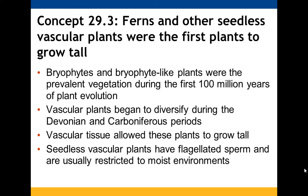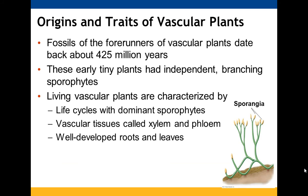Ferns and other seedless vascular plants were the first to get taller. Bryophyte-like plants dominated for the first 100 million years when plants started to evolve. Then in the Devonian and Carboniferous periods we started seeing vascular plants, which allowed these plants to grow taller. Seedless vascular plants have flagellated sperm and are restricted to moist environments, dating back to about 425 million years ago.